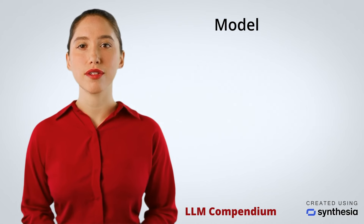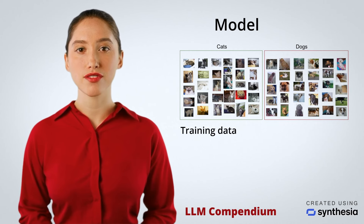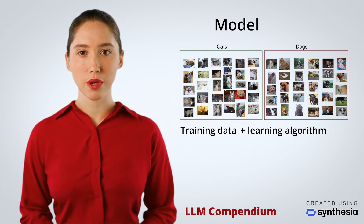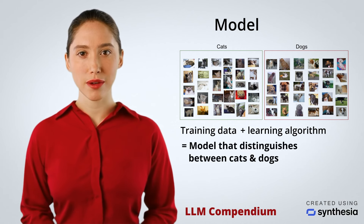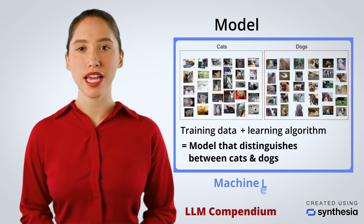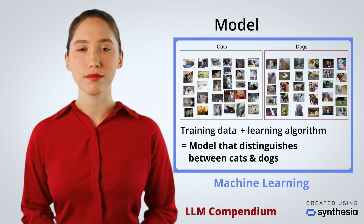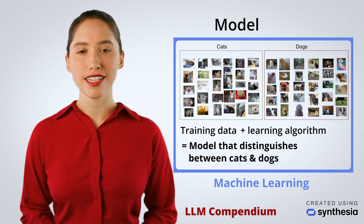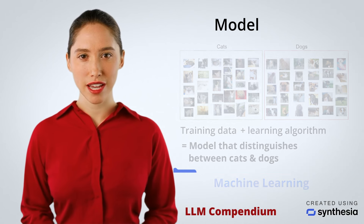For example, given photos of cats and dogs, we supply a label along with each photo that states whether it is a cat or a dog. We pick one of the teaching algorithms available and have the brain learn how to distinguish between the two types of animals. This is what machine learning is all about, and the result of this learning process is a model — a digital brain that has the capacity to distinguish between cats and dogs with a high prediction rate.